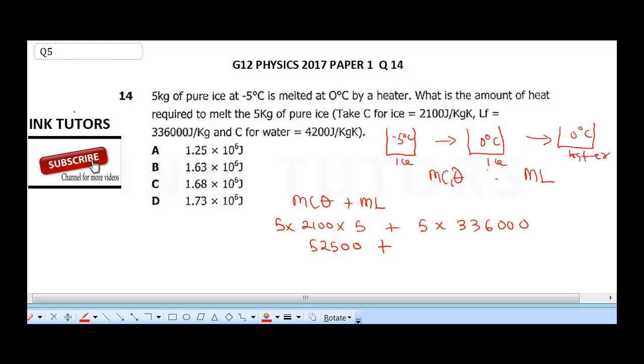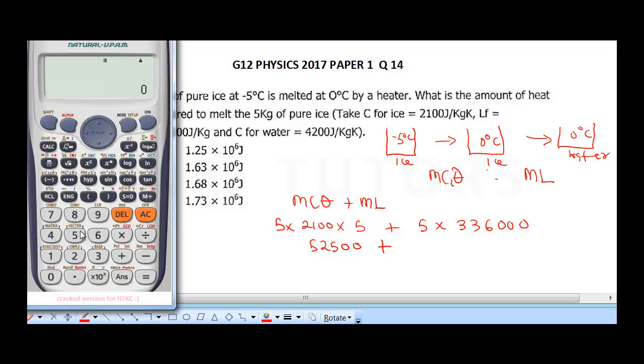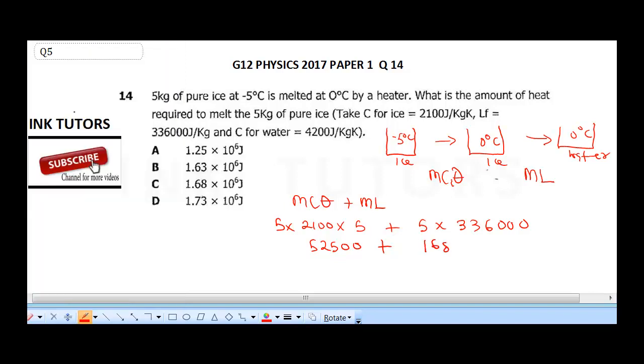then when we multiply 5 by 336000, we're going to get 1680000.